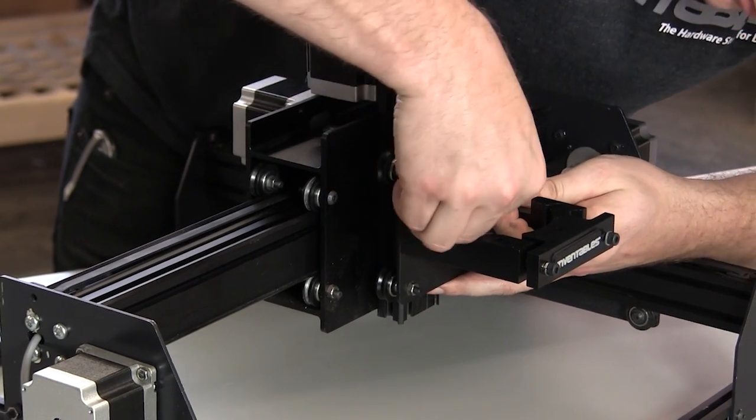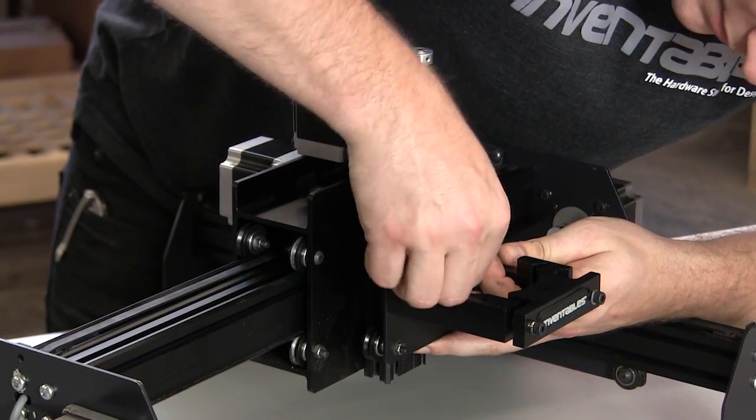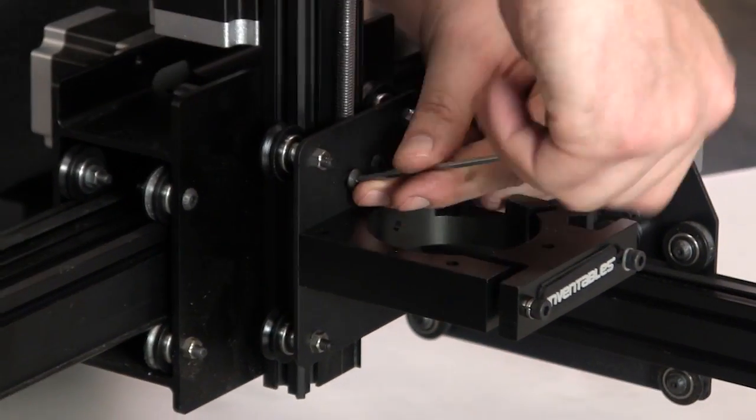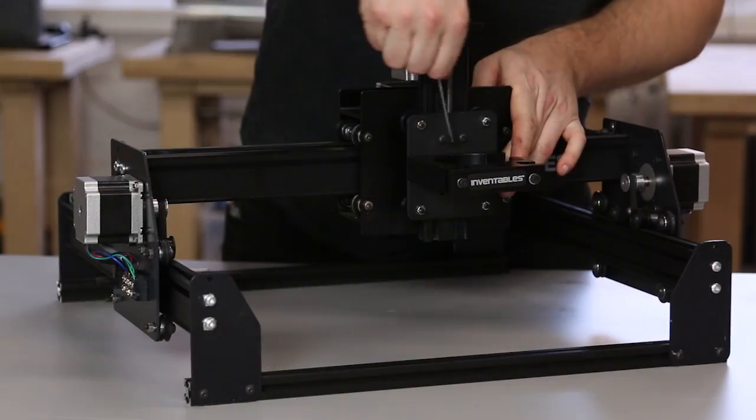Line the two holes on the plate with the Delrin nut and thread two screws into it. Start by getting these screws finger tight, and then wrench them down.